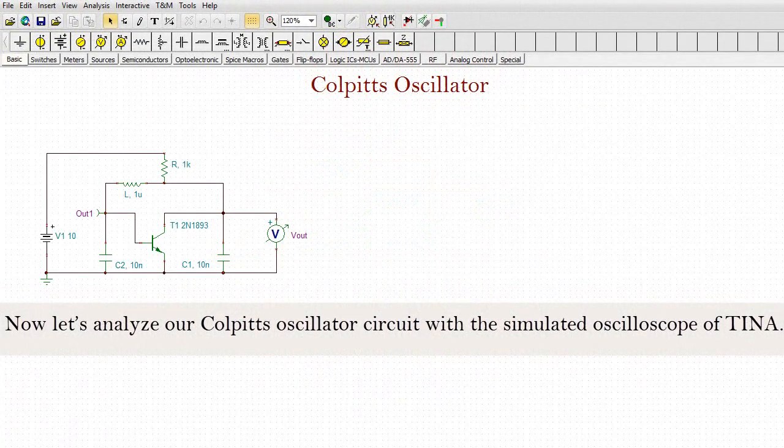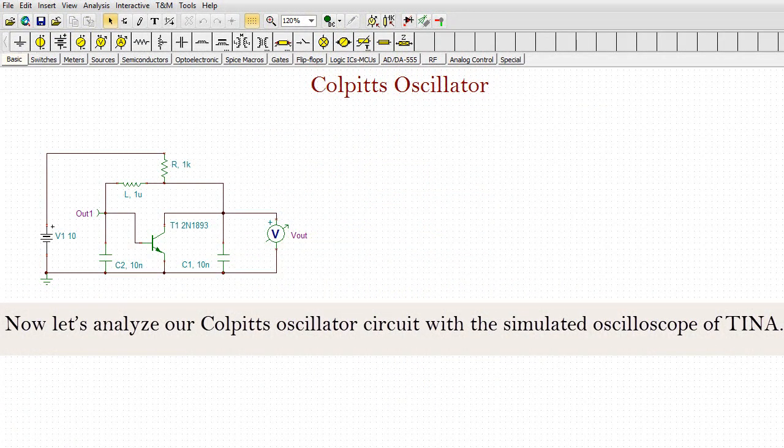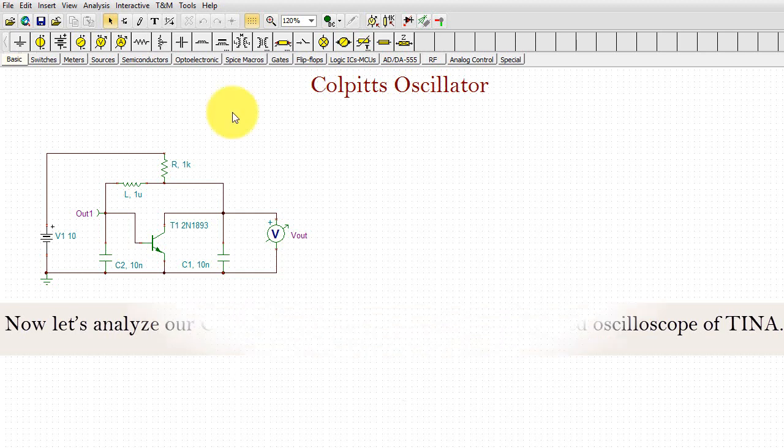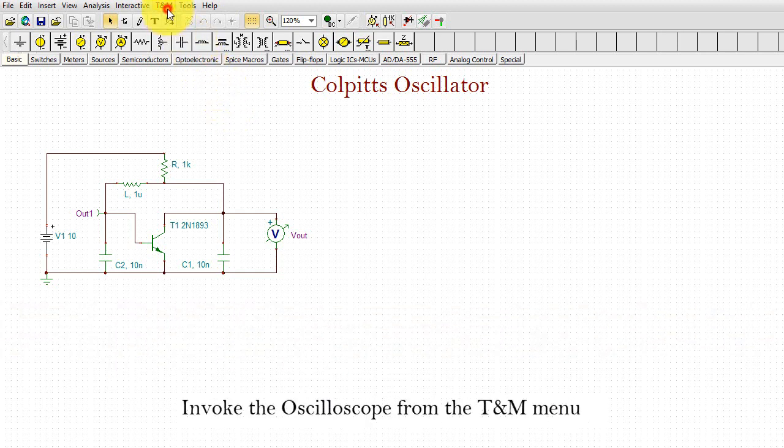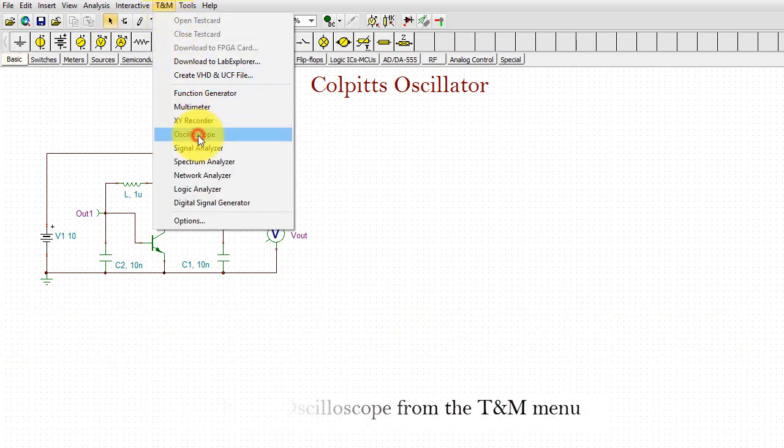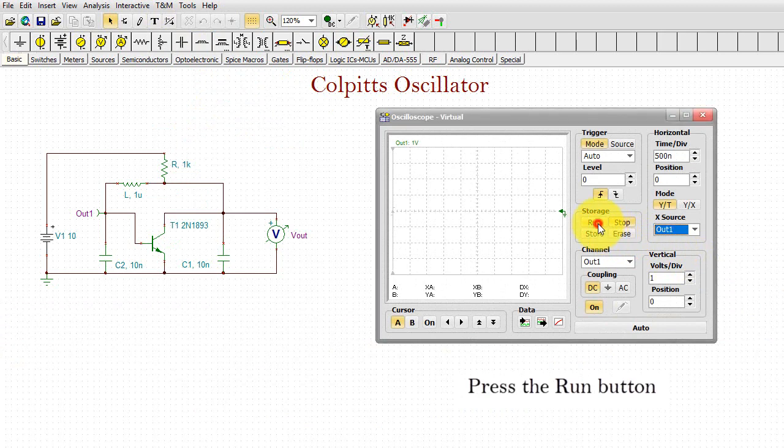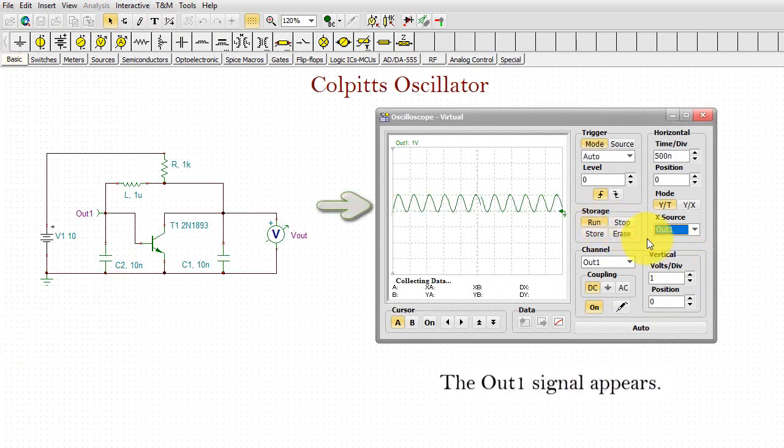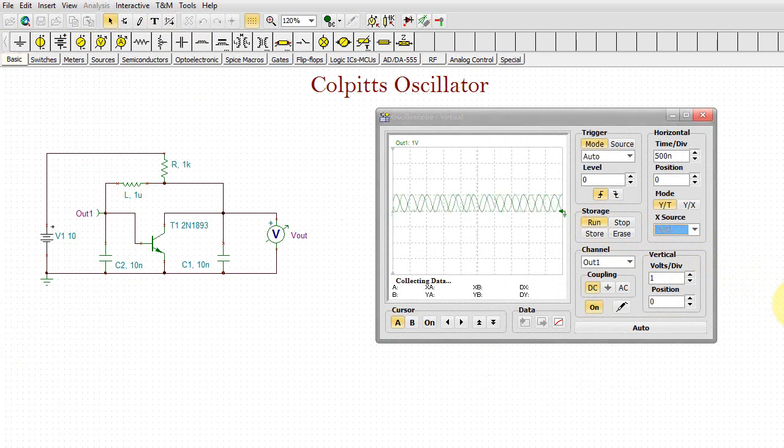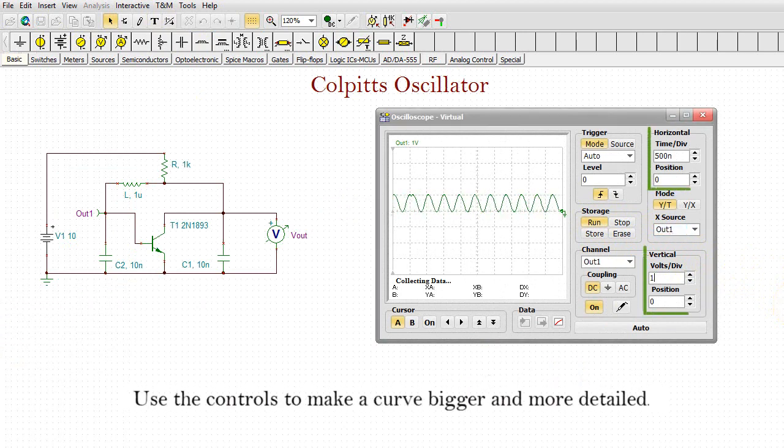Now let's analyze our Colpitts oscillator circuit with the simulated oscilloscope of TINA. Invoke the oscilloscope from the TNM menu. Press the RUN button. The OUT1 signal appears.